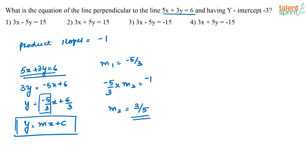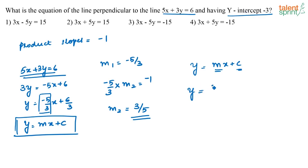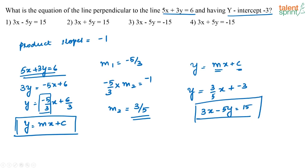So what is the equation of the perpendicular line that we are looking for? The line will be of the form y is equal to mx plus c, where m is the slope and c is the y-intercept of the line. In the question they have already mentioned that the y-intercept is equal to minus 3. So the equation of the second line will be y is equal to 3 by 5 x plus minus 3, or 3x minus 5y is equal to 15.